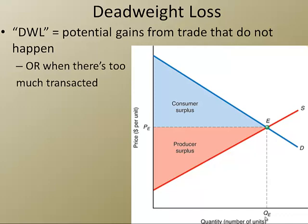Let's imagine that instead of producing the market clearing quantity, we produce a lower amount — call it Q low. Let's say that we are going to chop off these last few transactions. We're not going to produce anything to the right of that line. What happens is this triangle here would have been consumer surplus had those trades occurred, and this triangle right here would have been producer surplus had those trades occurred.